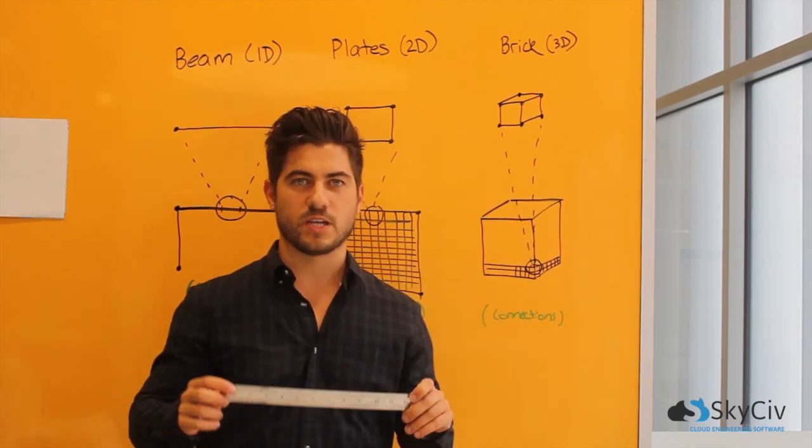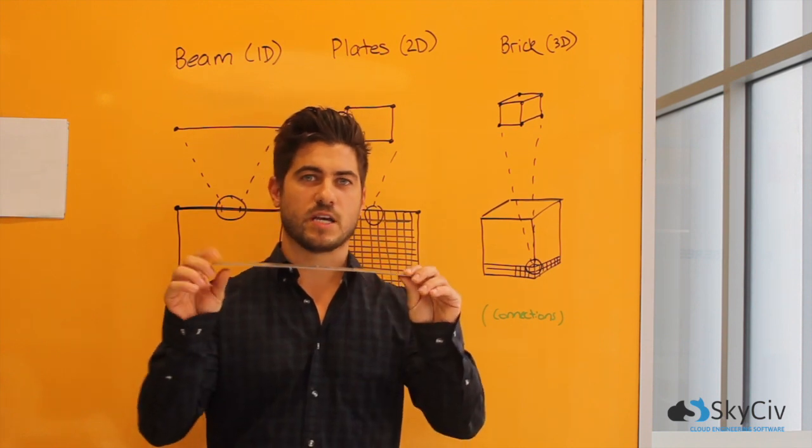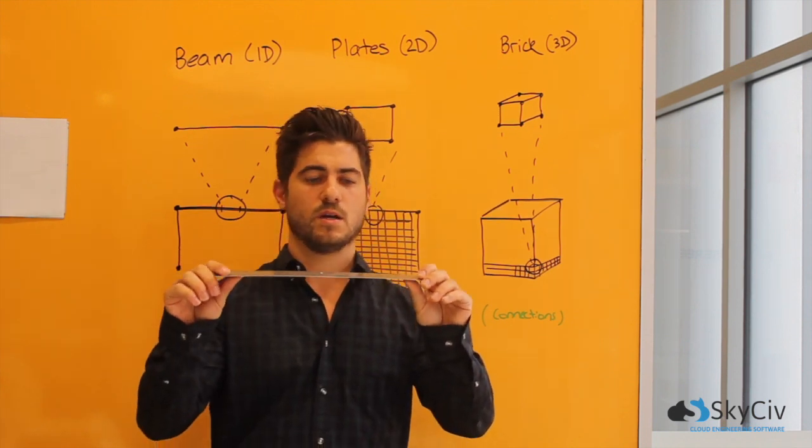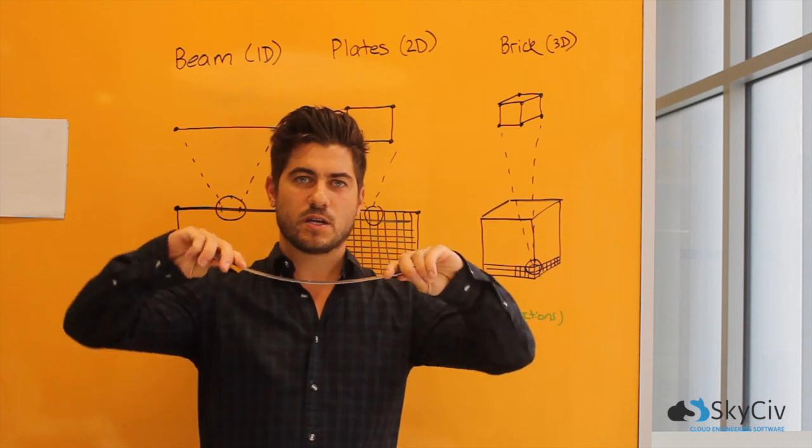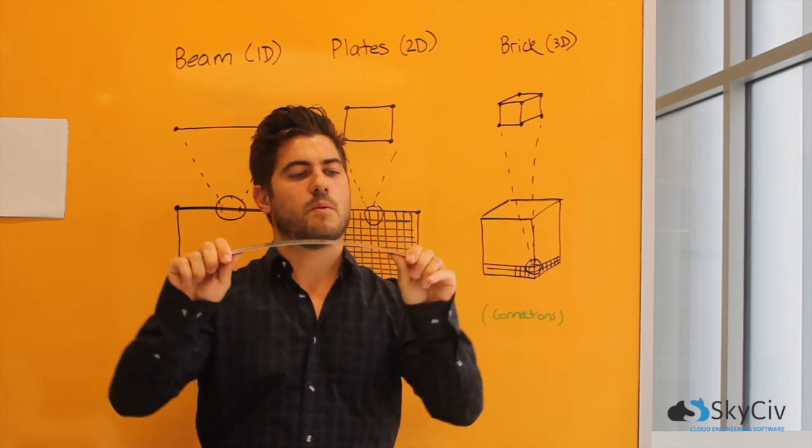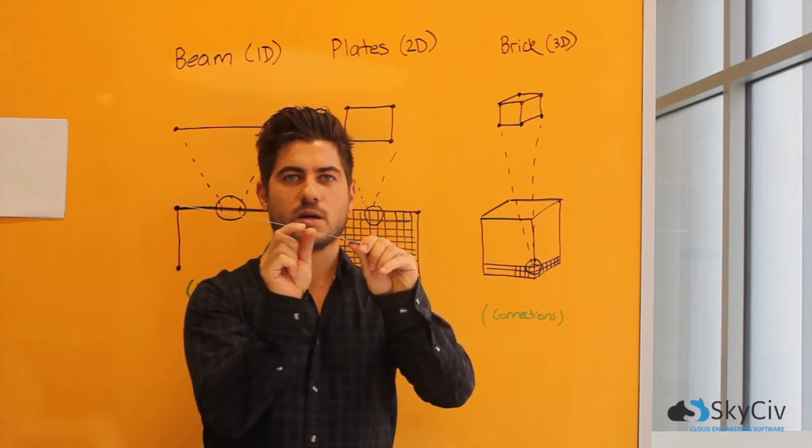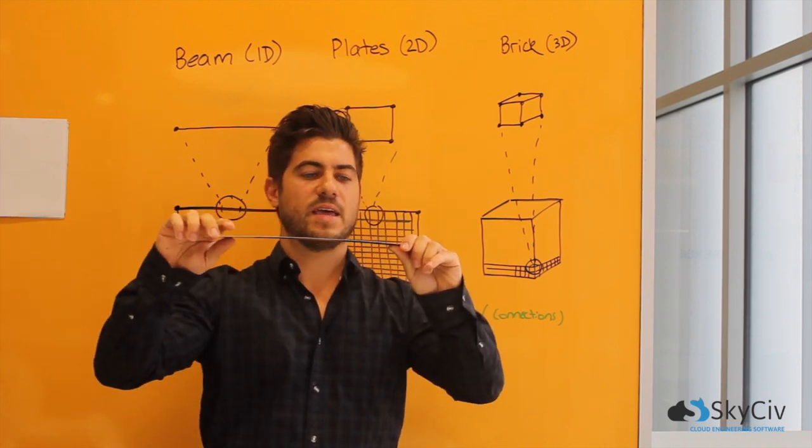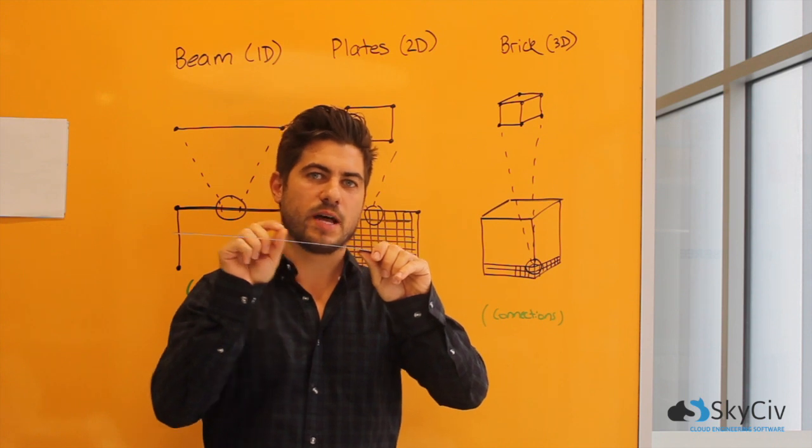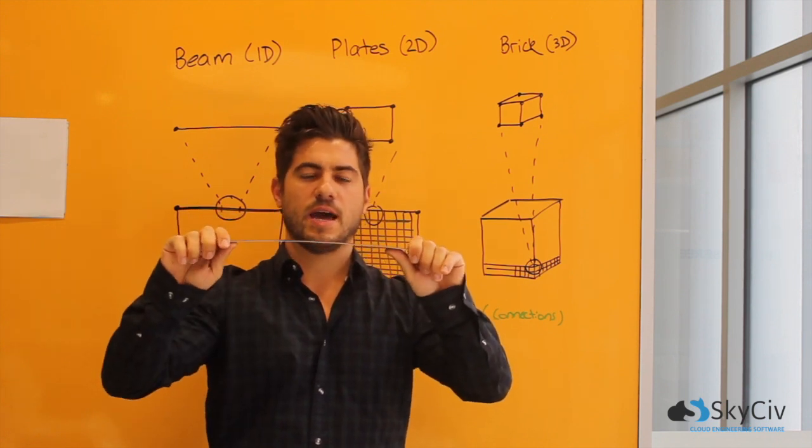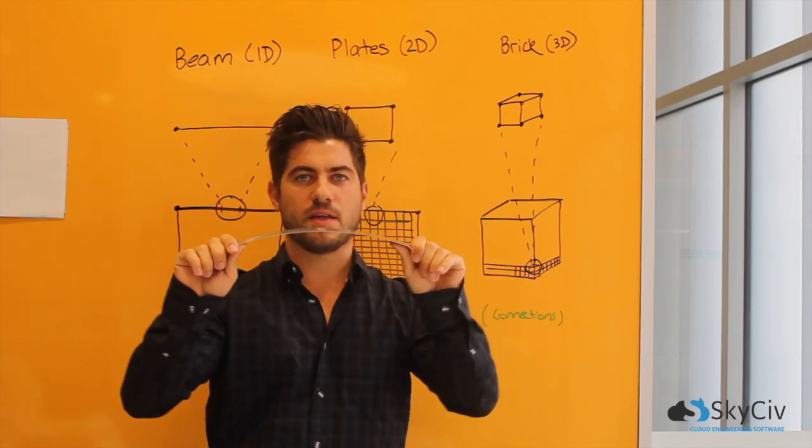So take this ruler for example. If this was a beam, say it could be steel, it could be concrete. If I apply loads to it, it's going to bend or deflect. Now what I can do is break up this ruler into smaller segments, say one centimeter of the lines, and then calculate each individual result at each of those points. And that should give me a pretty good understanding of how that beam is deflecting.